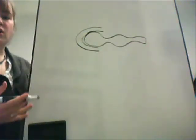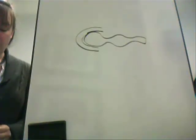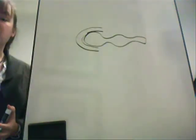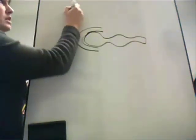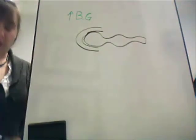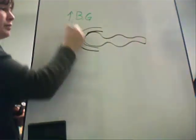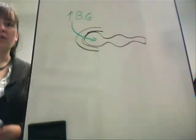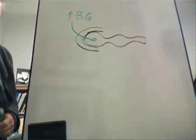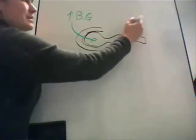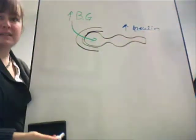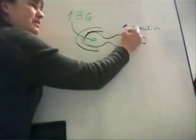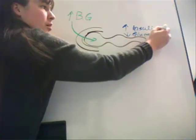The pancreas responds to changes in blood glucose levels. This illustration differs from what you've seen previously because this organ has the capacity to produce two types of hormones — insulin and glucagon — which have opposing effects. If I have elevations in blood glucose, those elevations will affect the pancreas, and in response the pancreas will begin secretion of insulin from the beta cells of the pancreatic islets.